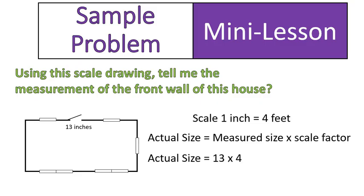So in this case, 13 inches times 4 feet, because our scale factor is 1 inch is equal to 4 feet. So our scale factor is a 1 to 4 ratio. So we'll take actual size 13, or the actual size is 52, because we took the measured size times the scale factor. And so in this drawing, our house would be 52 feet across the front of the house.